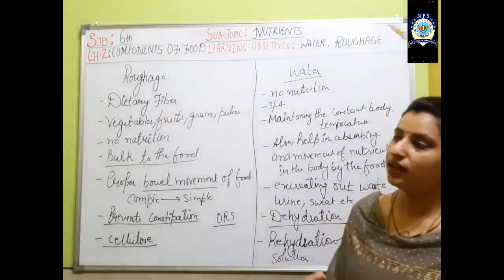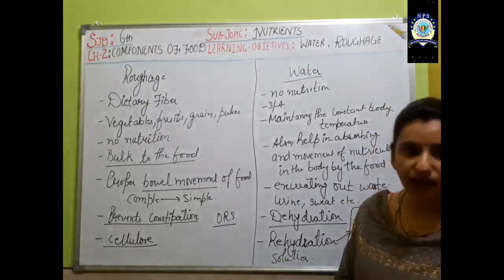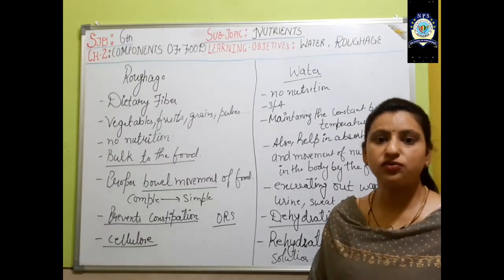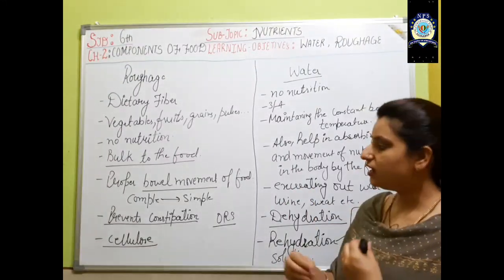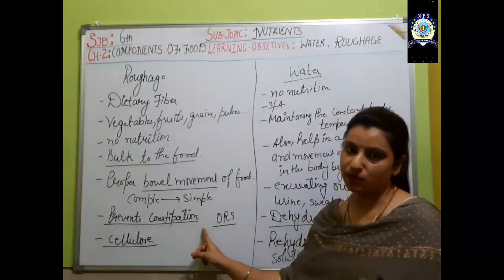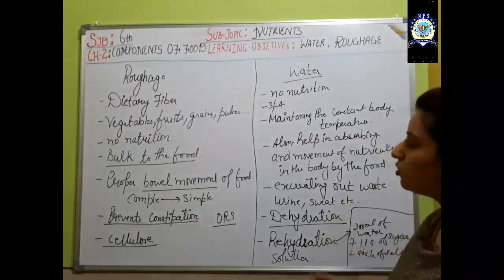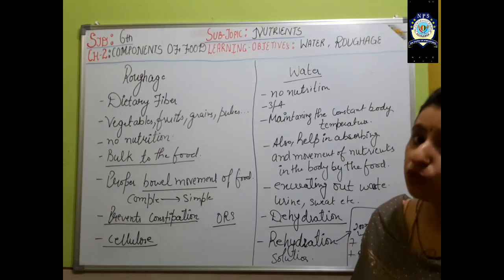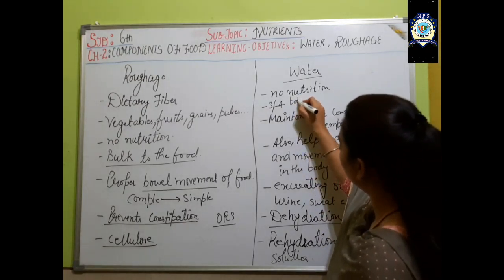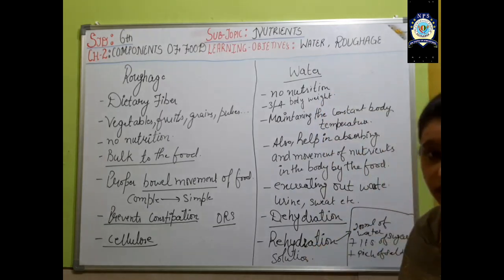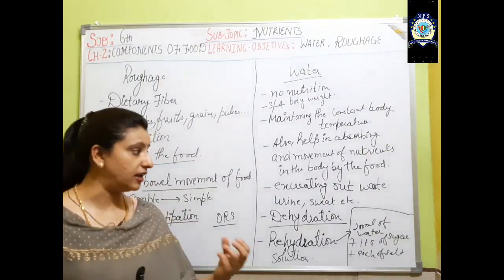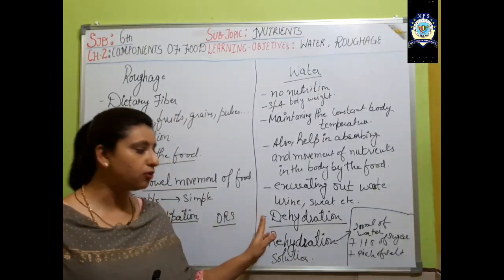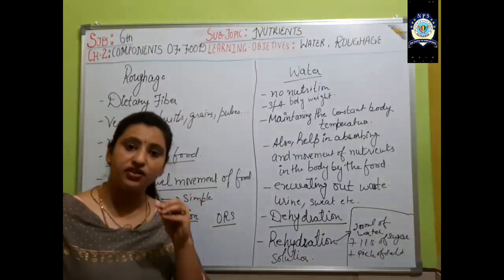Let's recap quickly. Roughage is dietary fiber, provided by vegetables, fruits, pulses, and cereals. It has no nutritional value but adds bulk to the food and helps in easy bowel movement and prevents constipation. Water also gives no nutrients to the body but forms three-fourths of body weight. It maintains constant body temperature, helps absorb nutrients, and excretes waste like urine and sweat.